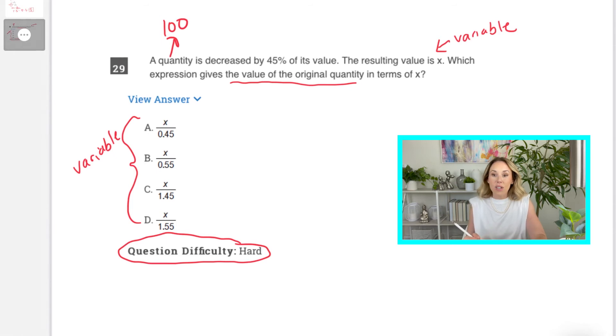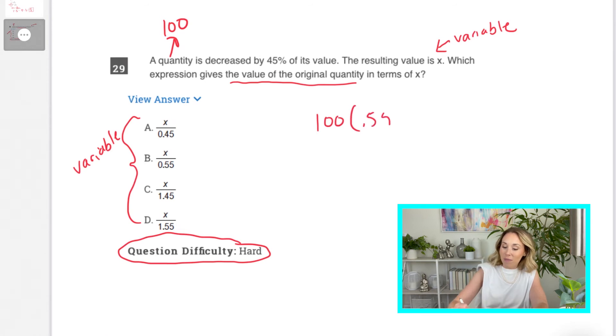And then I know if it's decreased by 45%, 55% remains. So, that means I'm going to multiply 100 by 55%. So, I get 55.